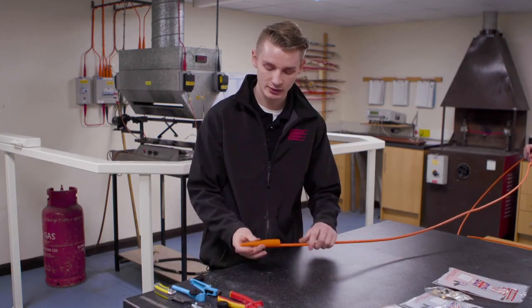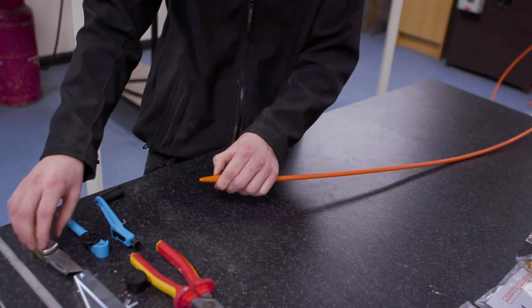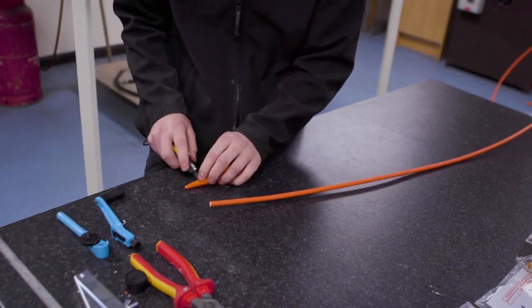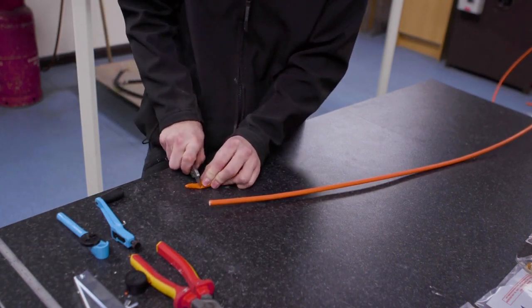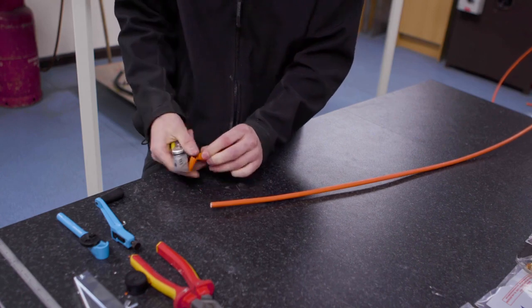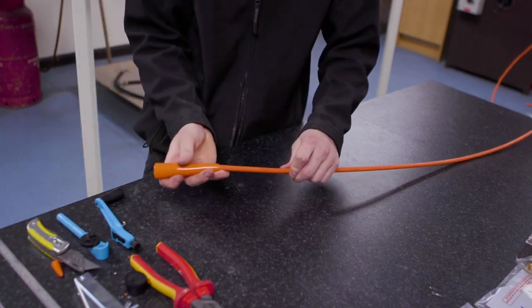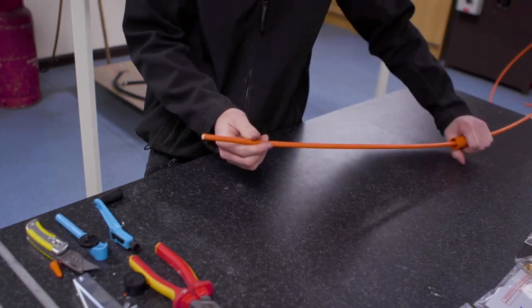Our first step is to measure our shroud against the cable and cut the tip of the shroud. We'll cut it using a Stanley blade and then place it over the cable and pop it out of the way.